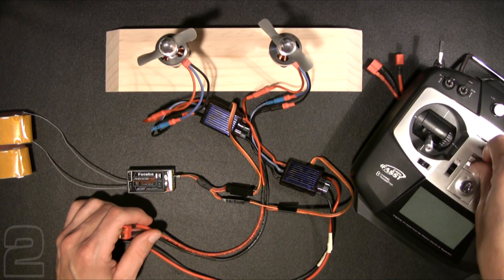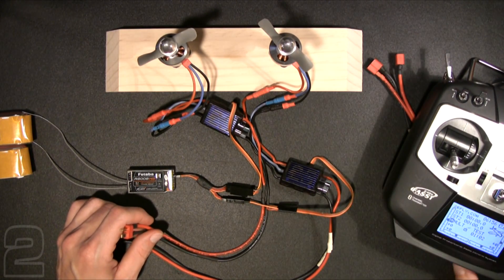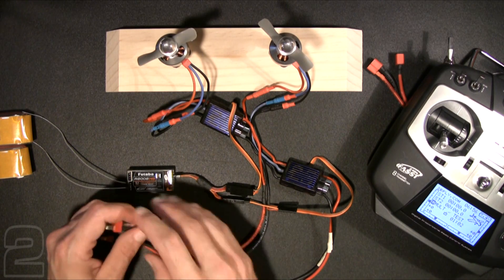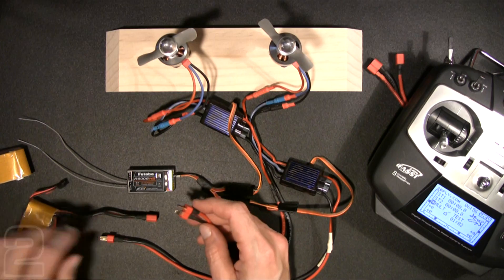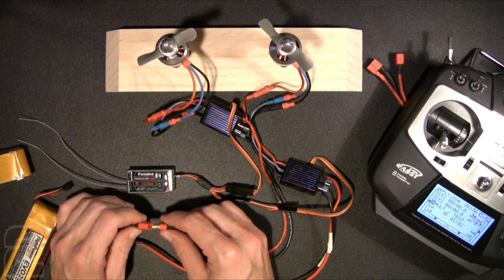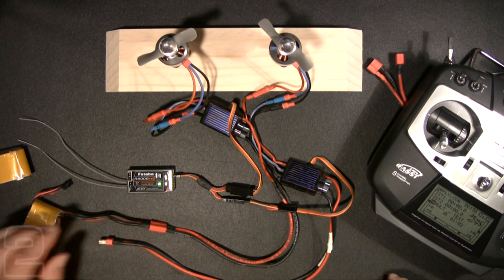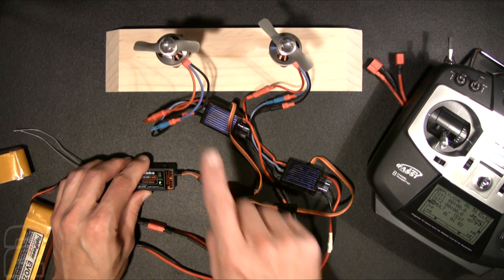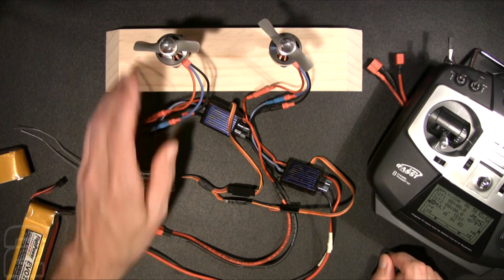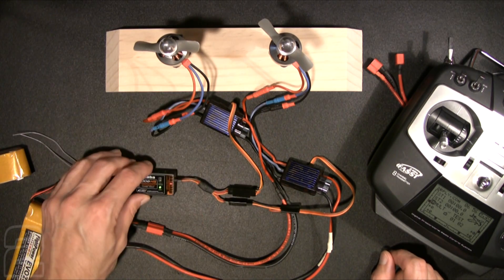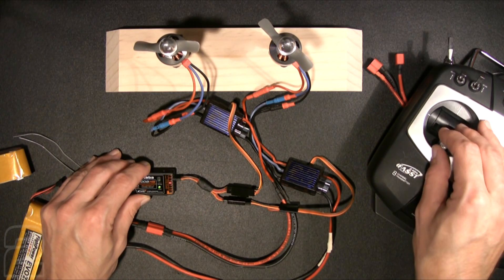Now I have the transmitter here. I'll power that on. Verify that I have the right model, which I do. It's our test bench. And we're going to take one of the flight batteries and connect that. We have power to our receiver. And you see the power is being supplied to the left motor, and that's the one that's already gone through its arming process. So that motor is fully armed.